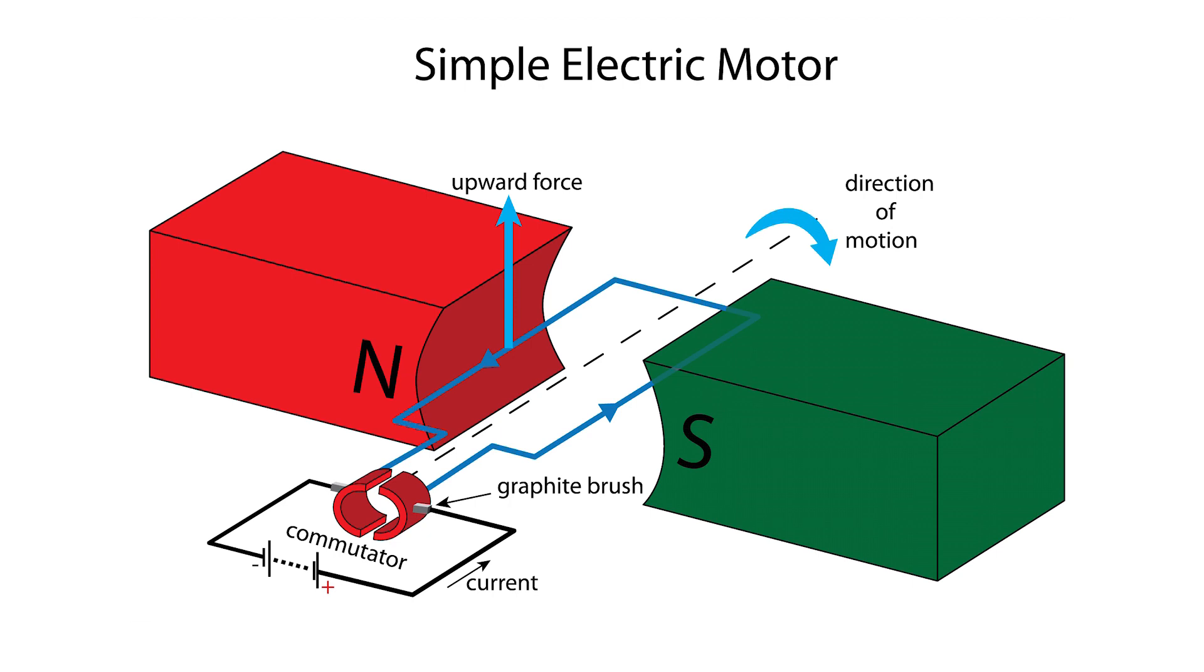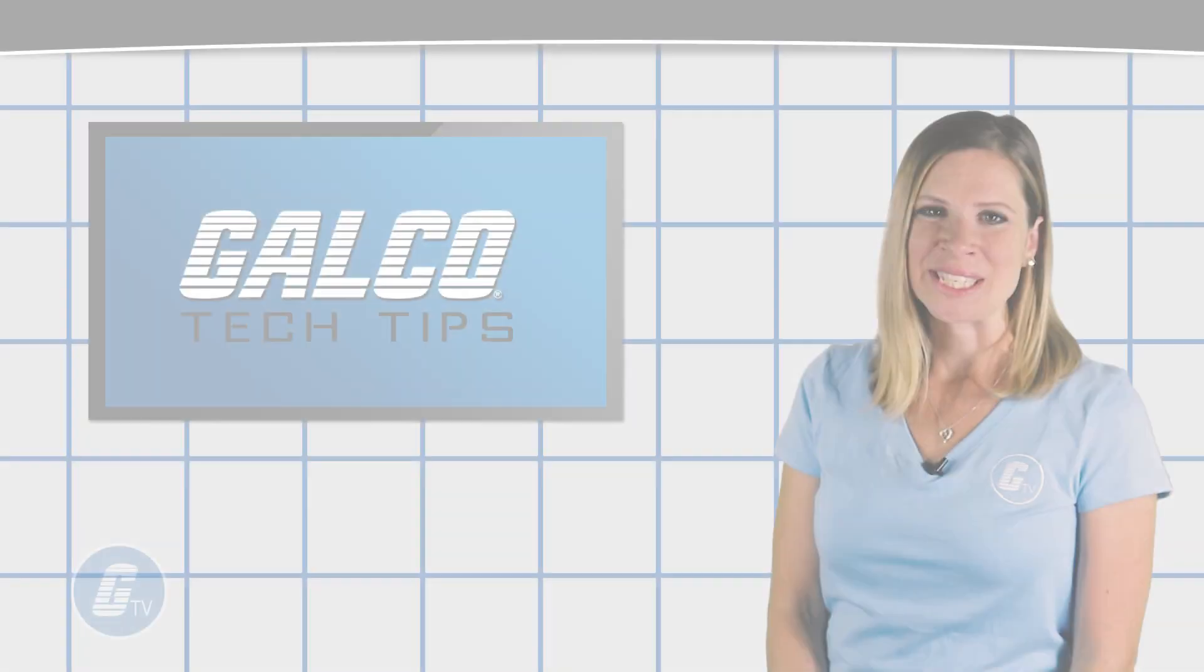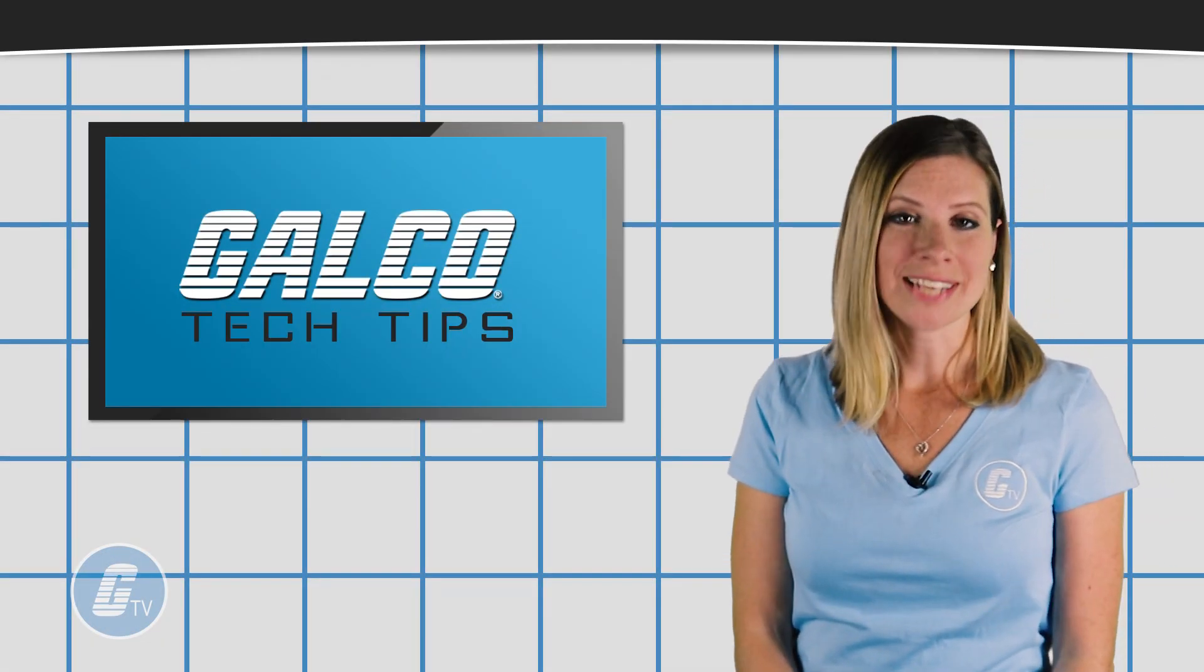Electricity flowing through the circuit will cause the coil to continually rotate in the same direction. Stay tuned to GalcoTV for more tech tips.